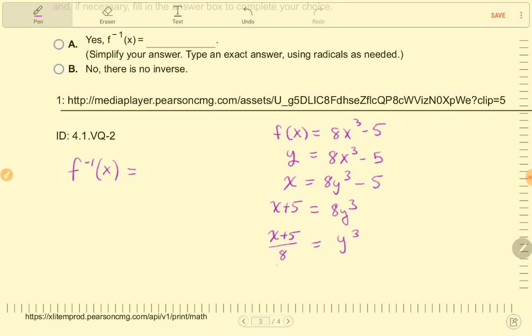And then I will have to take the cube root of both sides, so I will have the cube root of x plus 5 over 8, and then instead of writing y, I'm going to replace that with f inverse of x.